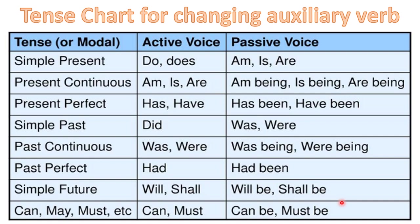To summarize the tense chart: in active voice the auxiliary verbs follow normal tense rules. In passive voice: do/does → is/am/are; is/am/are → is/am/are + being; has/have → has/have + been; did → was/were; was/were → was/were + being; had → had been; will/shall → will be/shall be; modal auxiliaries → can be, must be, etc.